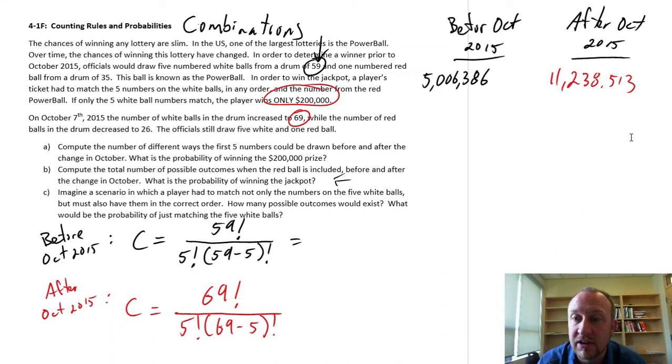So as a result of that change, the odds of matching those five balls significantly reduced, from about 1 in 5 million to now about 1 in 11.2 million. So as a result of the change, the probability of winning that $200,000 prize, it's almost cut in half, from 1 in 5 million to 1 in 11 million. So that's part A.